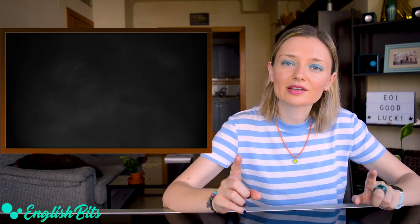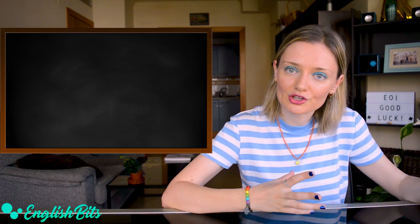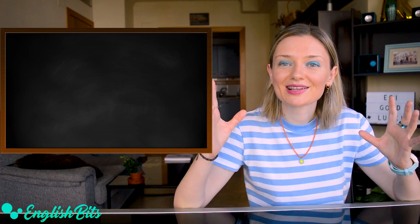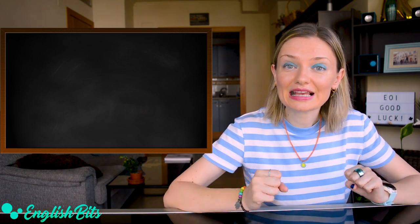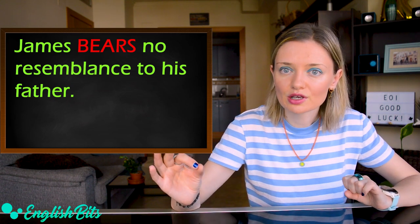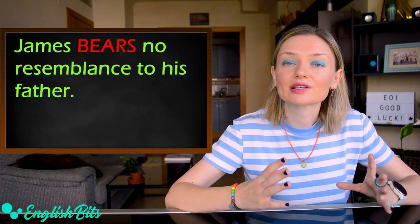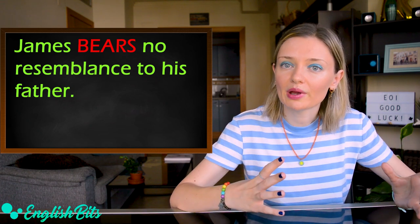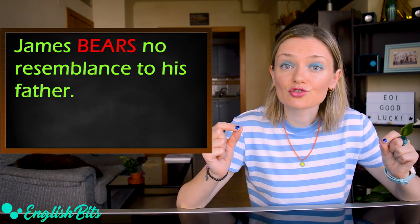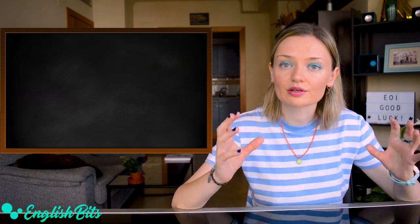Before we start, I'm going to give you the correct answer to the bonus question I asked you in the previous video. The correct sentence is: James bears no resemblance to his father. So the correct verb is to bear — to bear no resemblance to somebody. And 'resemblance' is a C2 noun.